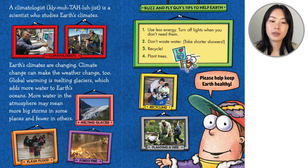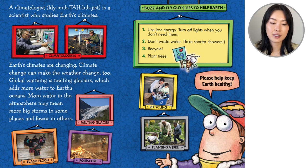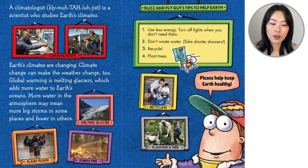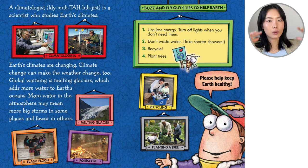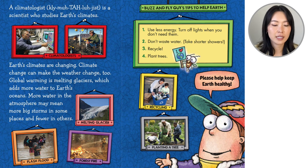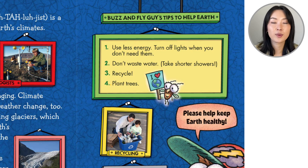So we learned about meteorologists and climate. A climatologist is a scientist who studies Earth's climates. Earth's climates are changing — climate change can make weather change too. Global warming is melting glaciers, which adds more water to Earth's oceans. As the ice melts, the water level gets higher. More water in the atmosphere may mean more storms in some places and fewer in others. Effects of climate change include flash floods, melting glaciers, and forest fires.